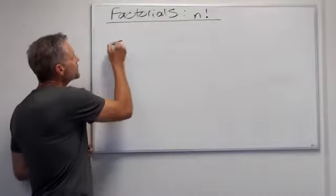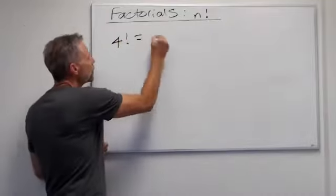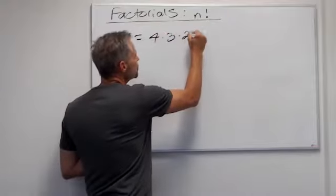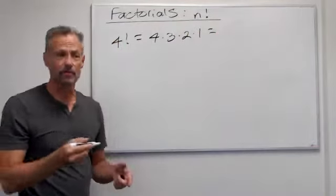Okay, so for instance, 4 factorial is going to be 4 times 3 times 2 times 1. So that's just going to be 24.